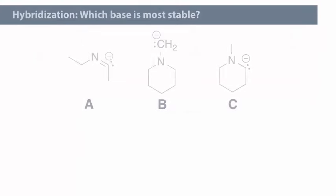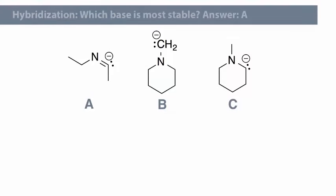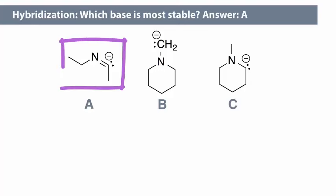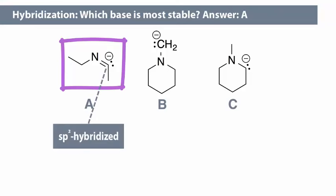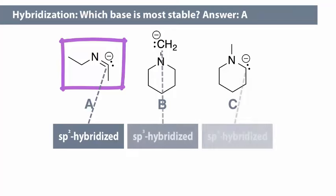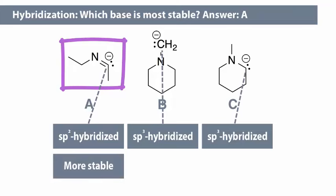Of the three bases shown here, which one is most stable? Base A is most stable. To figure this out, determine the hybridization of the basic atom in each case. Base A is SP2 hybridized, whereas the other two basic atoms are SP3 hybridized. SP2 hybridized bases are more stable than SP3 hybridized bases, as described before.